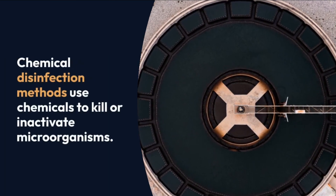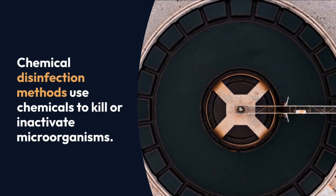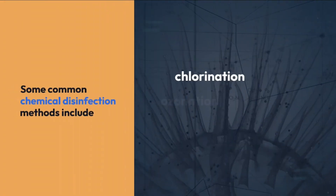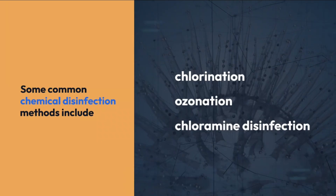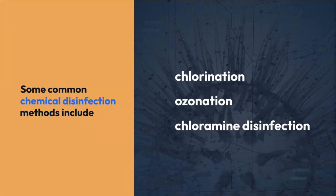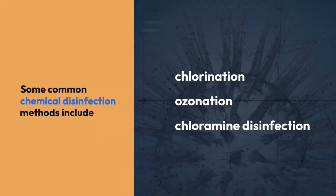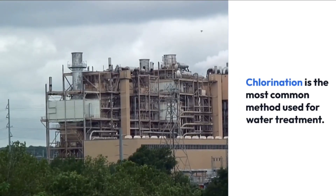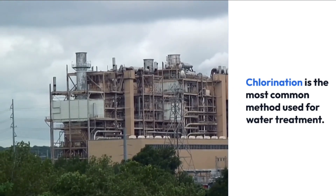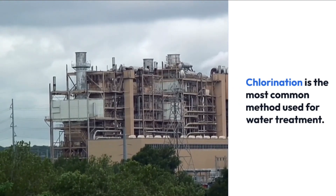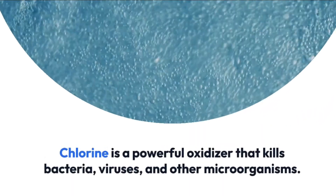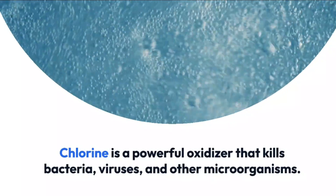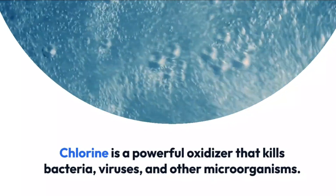Chemical disinfection methods use chemicals to kill or inactivate microorganisms. Some common chemical disinfection methods include chlorination. Chlorination is the most common chemical disinfection method used for water treatment. Chlorine is a powerful oxidizer that kills bacteria, viruses, and other microorganisms.